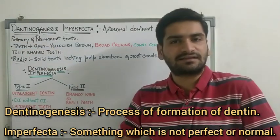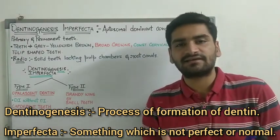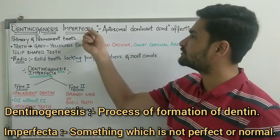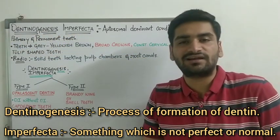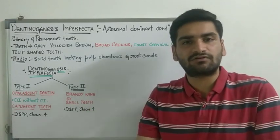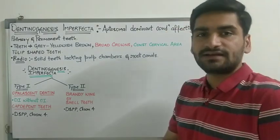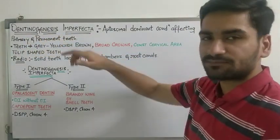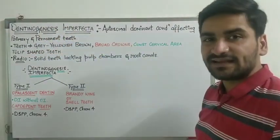Dentinogenesis is nothing but the process of formation of dentin, and something which is imperfect is known as imperfect. So the process of dentin formation which is imperfect - not leading to proper formation of dentin - the structural formation of dentin is not proper in terms of strength, and it is wearing off very early. So when dentin formation is not proper, that is known as dentinogenesis imperfecta.